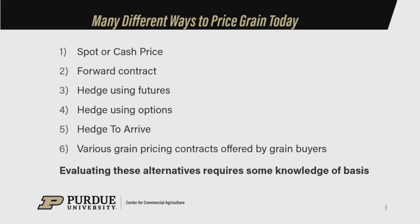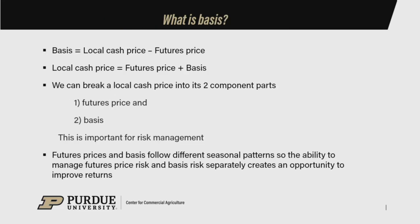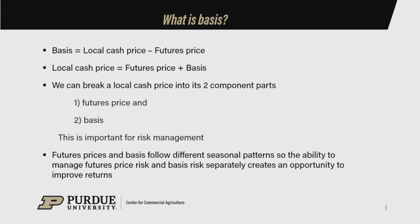That requires some local information. Basis is just that local cash price minus the futures price. We can rearrange that equation with some simple math and derive what the local cash price is a function of — namely the futures price plus the basis. When you break that local cash price into its two component parts, that's pretty powerful, because now you can actually separate the decision on when you want to set the futures price and when you want to establish the basis. And that's really important for risk management.